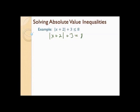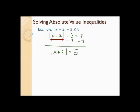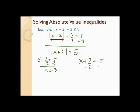Next step: solve it just like an absolute value equation — isolate the absolute value first. Subtracting 3 from both sides gives absolute value of x plus 2 equals 5. Now make two equations: x plus 2 equals 5, and x plus 2 equals negative 5. Solving each: subtract 2 to get x equals 3, and subtract 2 to get x equals negative 7.